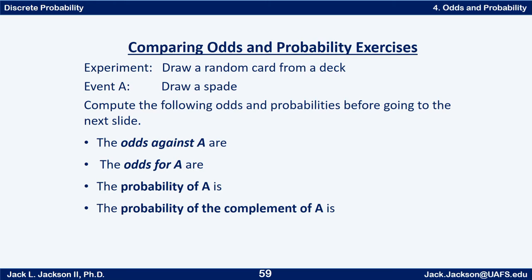Let's take the experiment: draw a random card from a standard deck of cards, and event A is draw a spade. Compute the odds and probabilities before going to the next slide. Find the odds against A, the odds for A, the probability of A, and the probability of the complement of A. Figure all those out — press pause now.